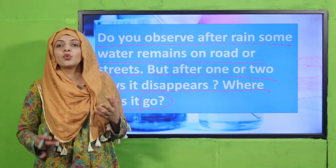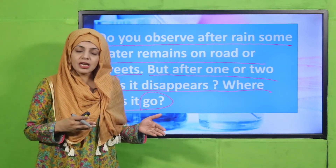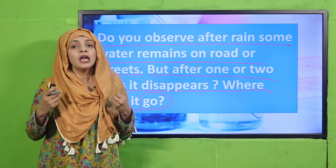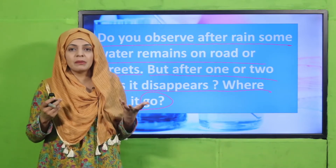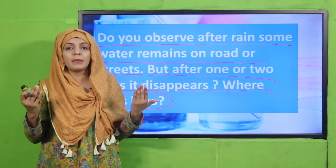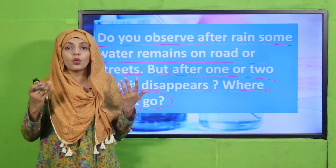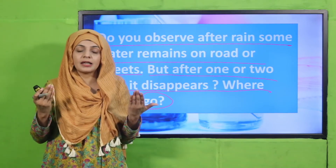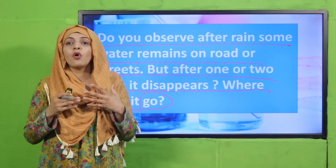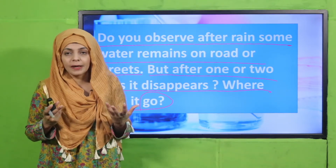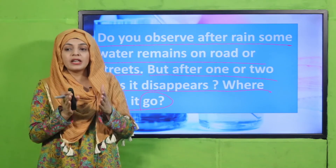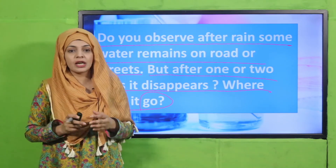Kuch paani jo hai woh zameen ke niche chala jata hai — mitti usko absorb kar leti hai. Kuch paani jo hai, suraj ki garmi ki wajah se hawa mein bukharat ki shakal mein evaporate hoke water vapors ki shakal ikhtiyar kar leta hai — yani ke it becomes gas aur woh hawa ka hissa ban jata hai. Is tarha se paani apni state change kar leta hai.